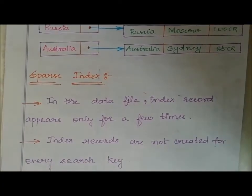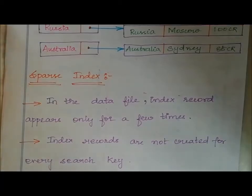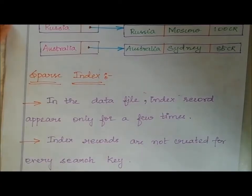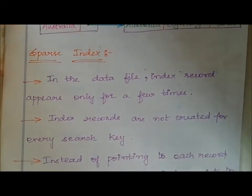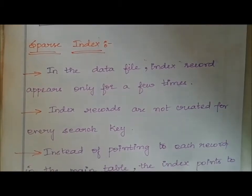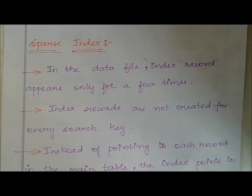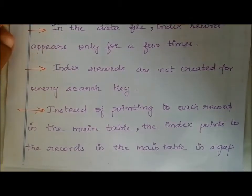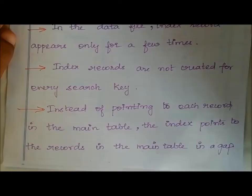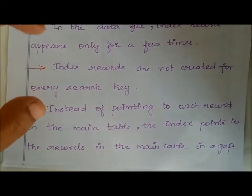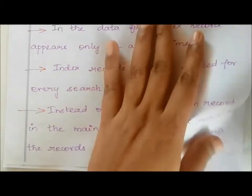Let's see what sparse index is. In the data file, index records appear only for a few records. In dense index, we create index for all records, but in sparse index, index records are not created for every search key. Instead of pointing to each record in the main table, the index points to records in the main table in a gap — only for certain records.